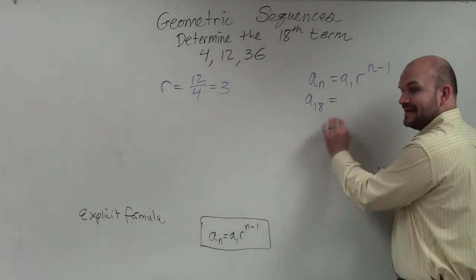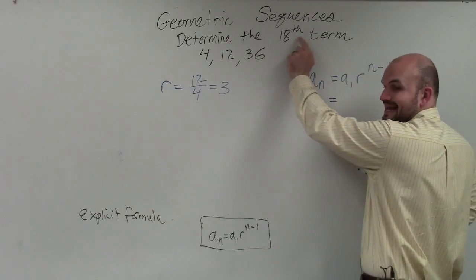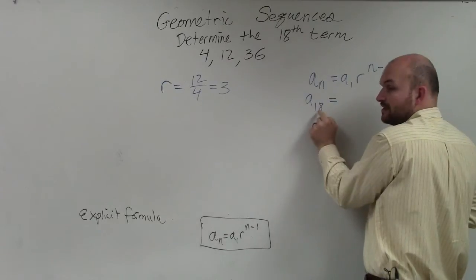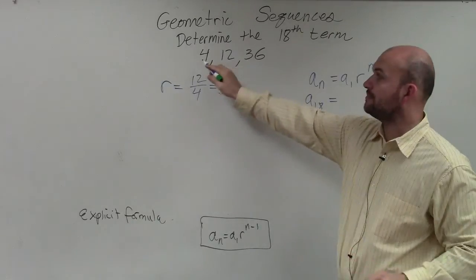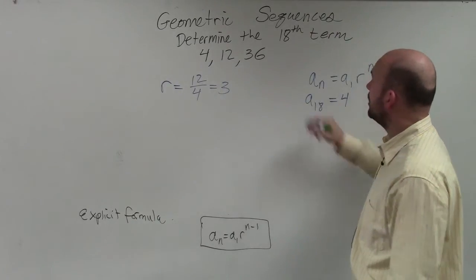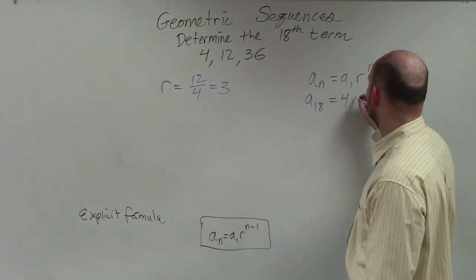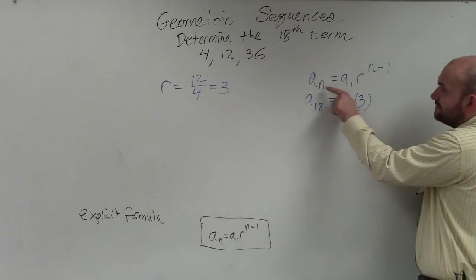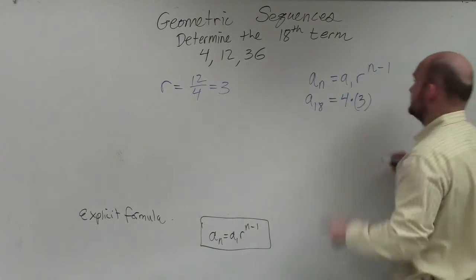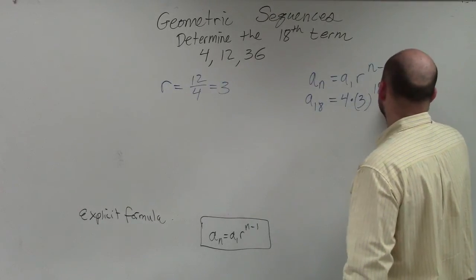Because n represents any number in the sequence, we're trying to find the 18th term. So we want to figure out what the 18th term is going to equal. A sub 1 represents 4. Our ratio is going to be 3. And then remember n, if n here is 18, then this n needs to be 18 minus 1.